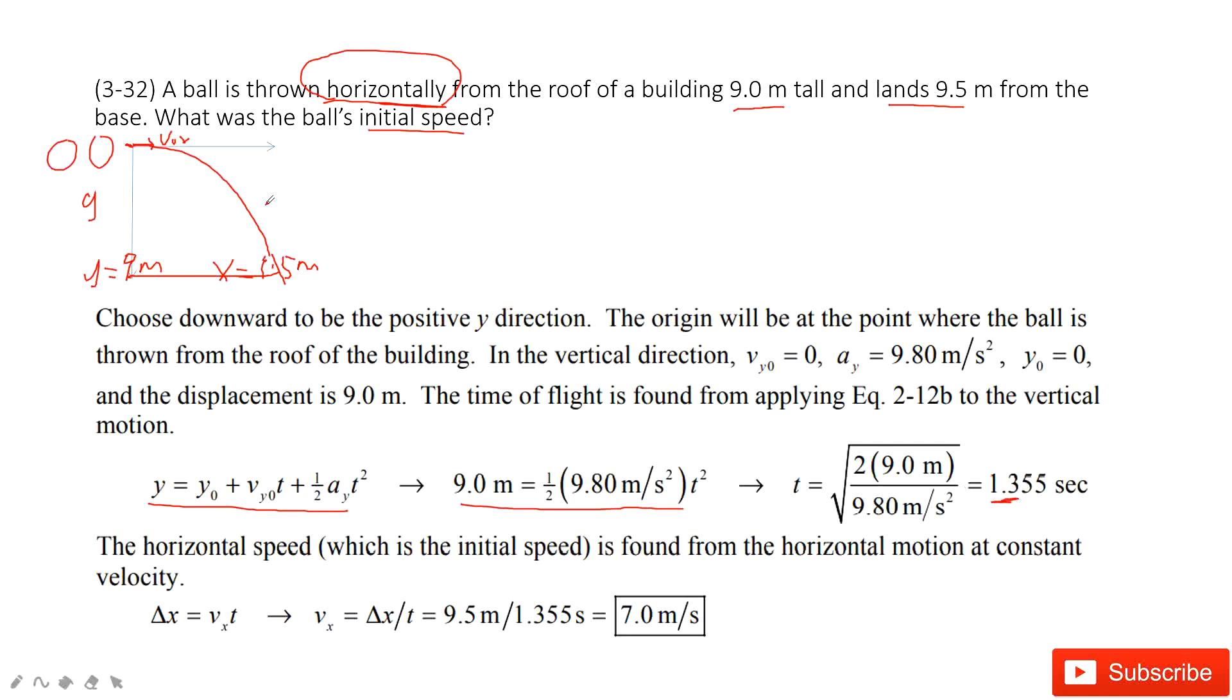After we get the time, we can use v naught times t equals displacement in the x component, giving us 7.0 meters per second. Thank you.